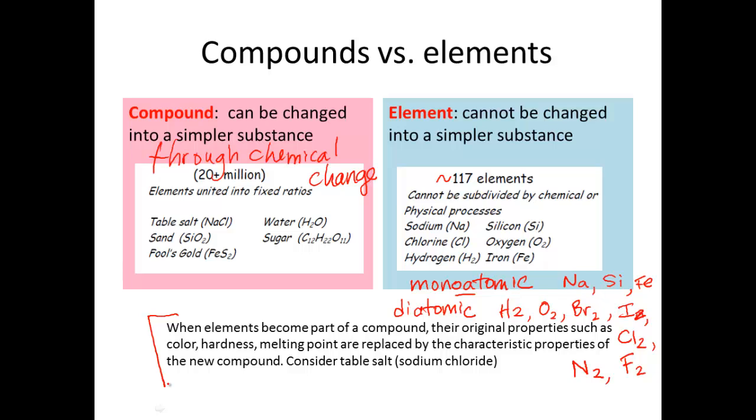Now a side note down here. It says when elements become part of a compound, their original properties, like color, hardness, melting point, are replaced. It says consider table salt. Sodium is a metal, and I'm going to write here, it's a solid, that is explosive in water. Chlorine is a gas that is poisonous, and it's green. So this is an explosive metal. Chlorine is a poisonous gas.